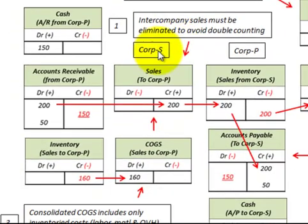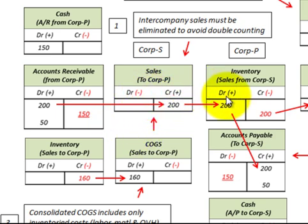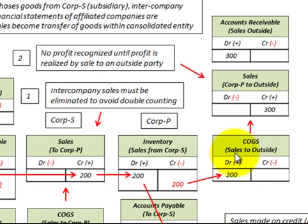Going down here and looking at our flow diagram, we have Corporation S, the subsidiary, selling to Corporation P, the parent. Corporation S has an inventory account, and when they make the sale to Corporation P, they also have a cost of goods sold account and a sales account. This sales account would flow into Corporation P's inventory account, and then after Corporation P makes sales to an outside party, you have the cost of goods sold for the inventory purchased from Corporation S, the subsidiary, and then the sales account.